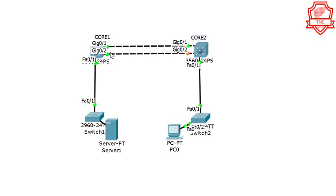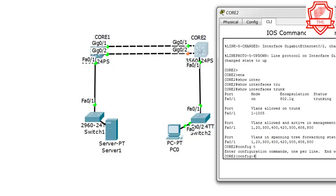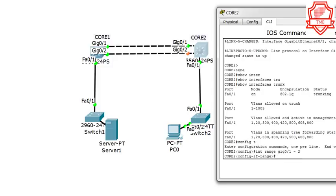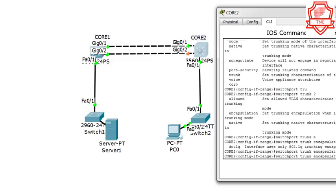So the ultimate goal in this scenario is to create a trunk port between these two switches so that the VLAN traffic will transfer and VLANs will be replicated. Let's go to Core 2, enter config t, and get gig 1 and gig 2 ready for trunking. We'll use the interface range command so we get both ports in one shot, going 'interface range gig 0/1-2'.